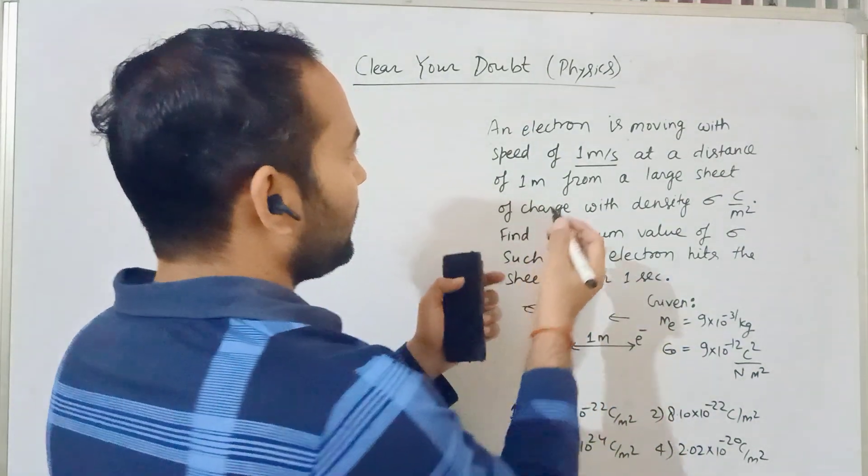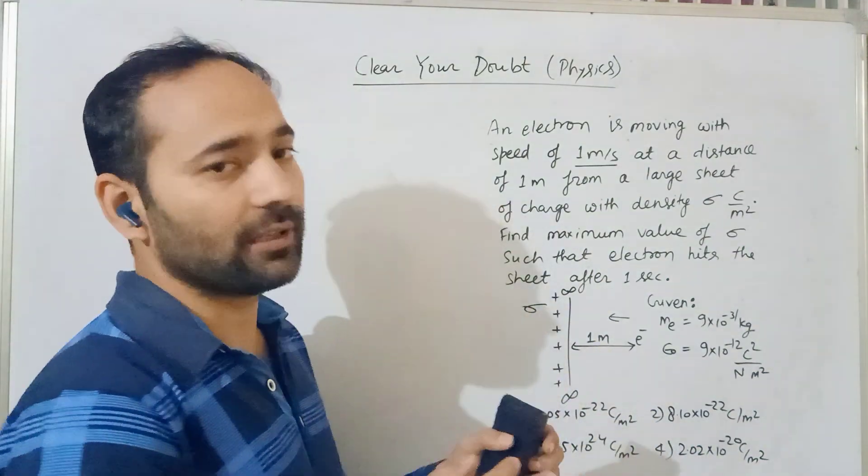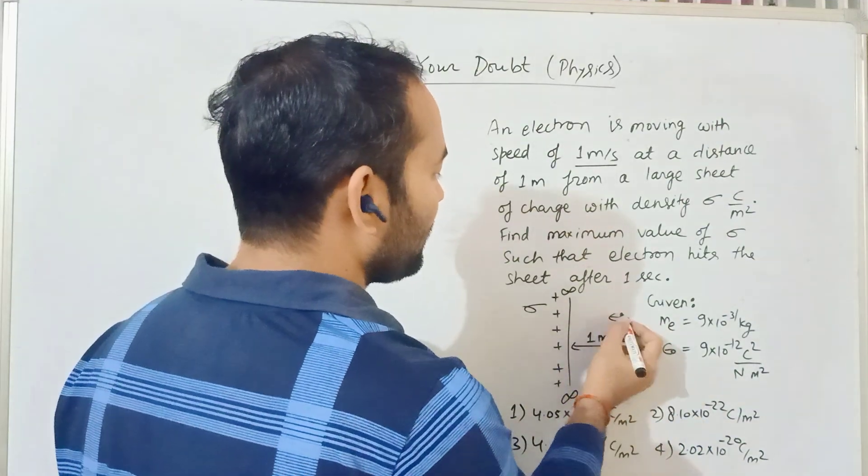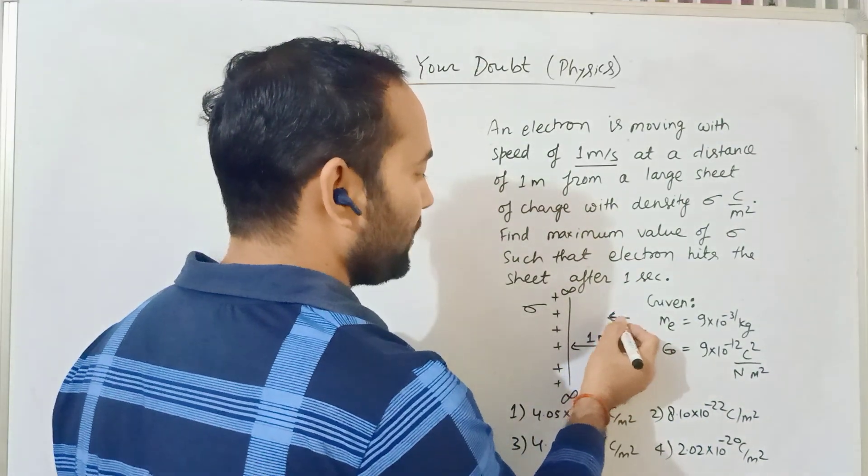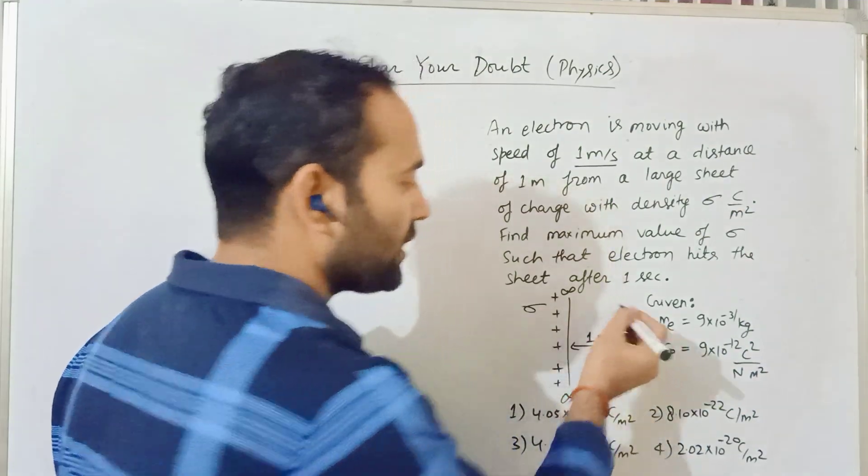Now let me tell you - the electron is moving in a direction. It is not given, but you have to think about it. The electron must be moving in this direction.